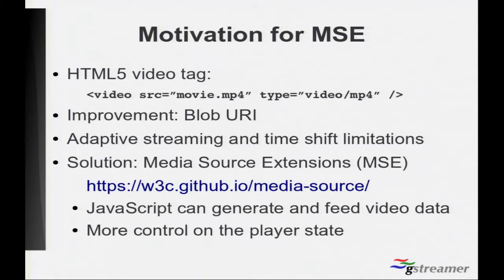But this tag has some limitations — the media that you want to play is limited. There are some use cases that are not appropriate for this limitation. So, to address that, the W3C has created a new addition, which is the Blob URL, which is a special kind of JavaScript object that you can supply so that data coming from other sources — coming from JavaScript, or from local files stored in special places — can be used, so that it can get the movie from alternative sources.